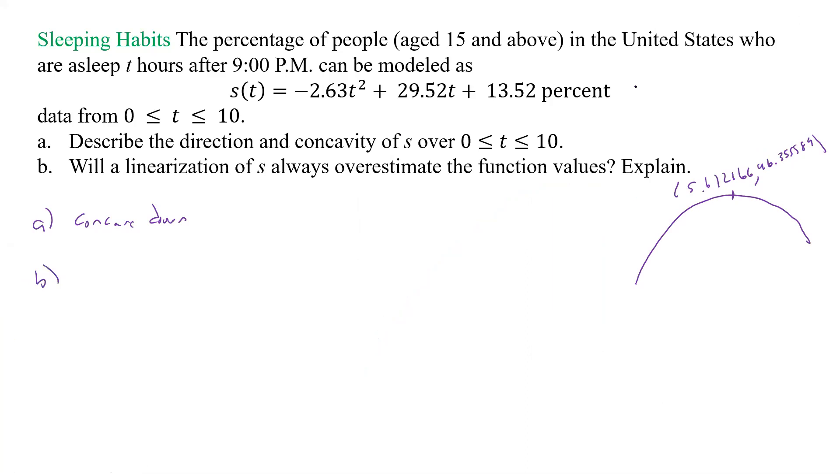Now we go back over here, and so it was 96.355589. And so what we have really, and really after this one, this is all we need here, because that's where it's going to go from increasing to decreasing. So it's going to be increasing from basically 0 to 5.61, and it's going to be decreasing from 5.61 to 10.